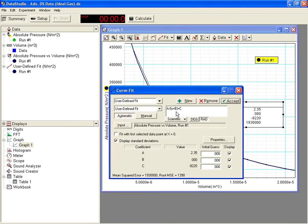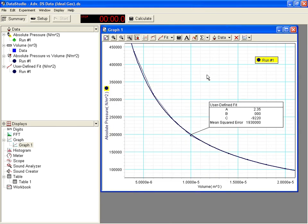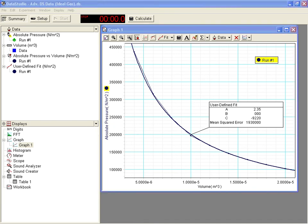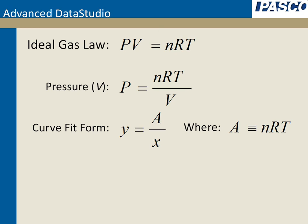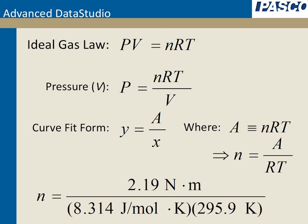So what coefficient is of interest in this equation? The A. The A is of interest in this equation. We want that A value to determine the moles of gas that are in the syringe. So now we can take that coefficient value, go back over here to our manipulation, and we can show that the number of moles of gas is equal to the coefficient value divided by R and T.